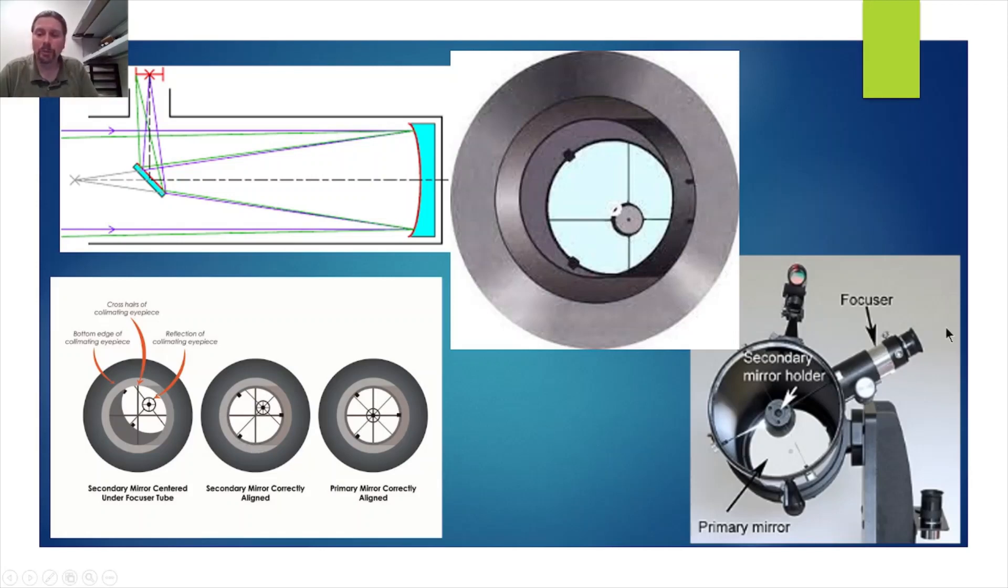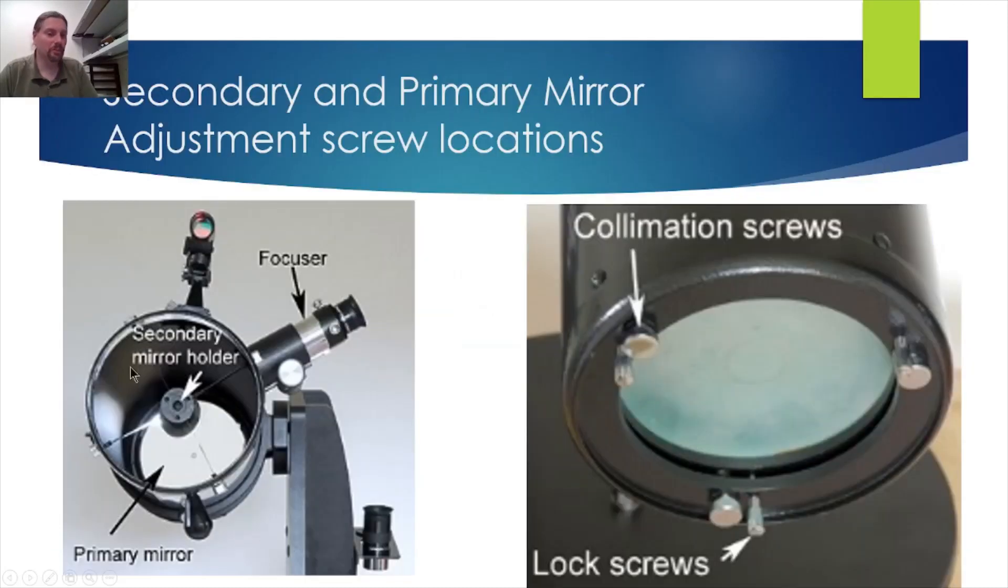Again, your collimator will go right in where your eyepiece goes. Your adjustment screws are in the front for the secondary mirror and in the back for the primary.